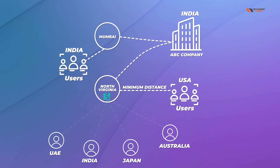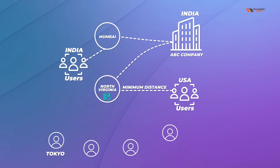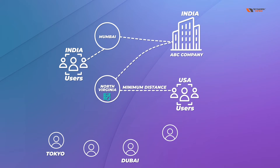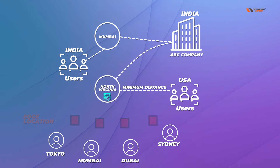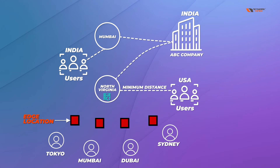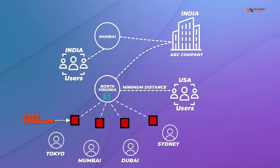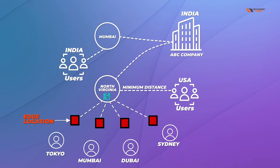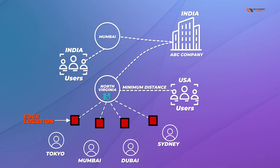The solution is that edge locations are available in all major cities. For example, there's one in Tokyo, one in Sydney, one in Dubai, and one in Mumbai. The distance between these cities and North Virginia is really large for global clients. But every edge location in these cities is part of the AWS global infrastructure, so they are connected with your server through the global infrastructure — you don't have to make any separate connectivity.